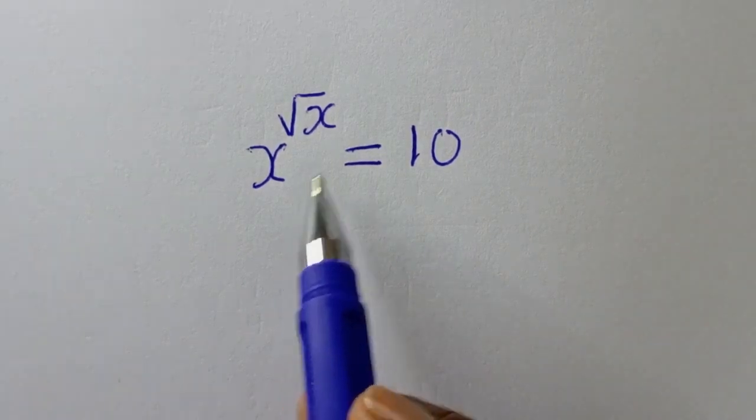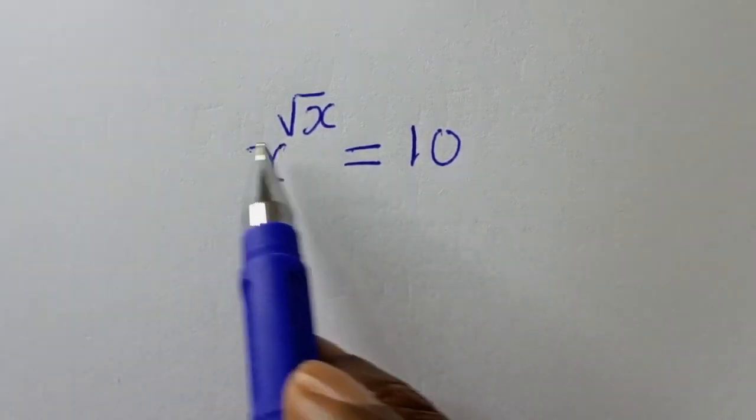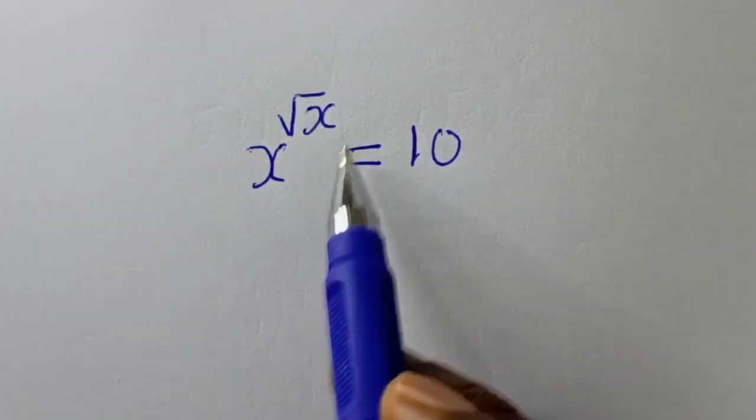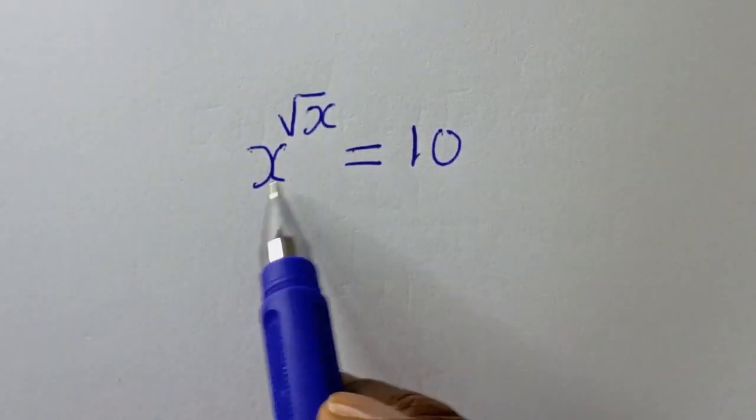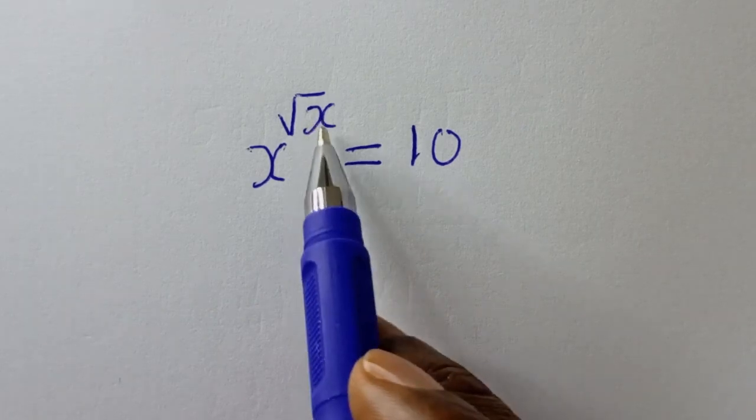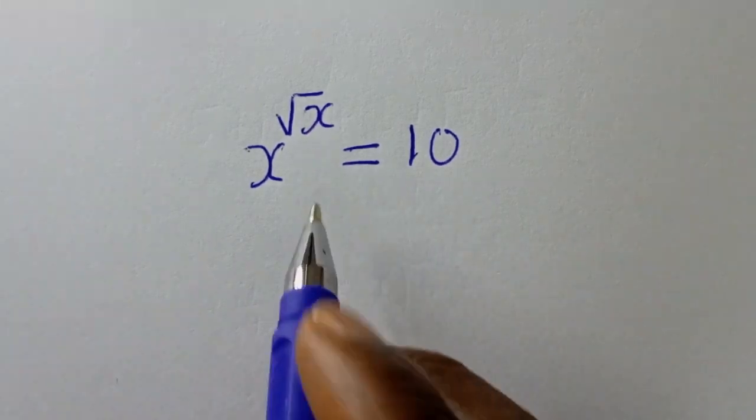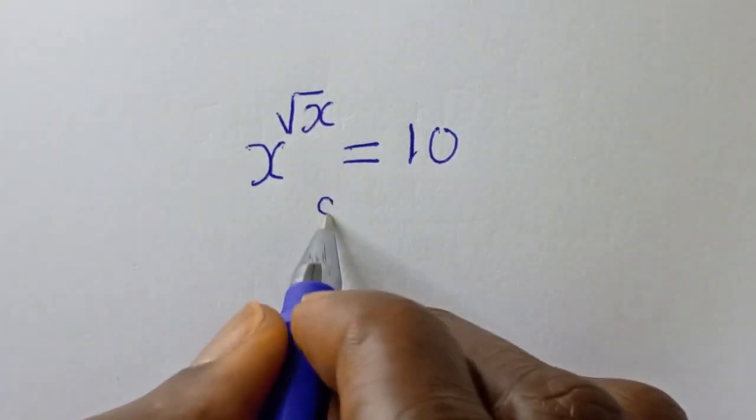Hello, welcome to Magis. In this class I want to find the value of s from this given equation: s to the power of square root of s is equal to 10.